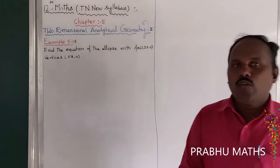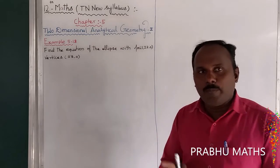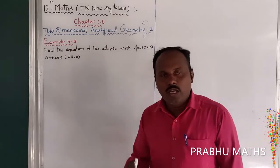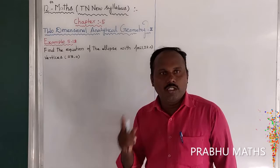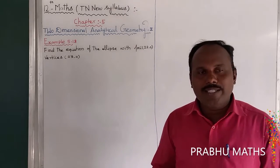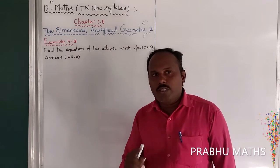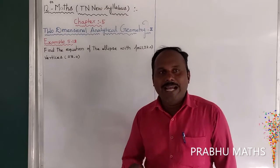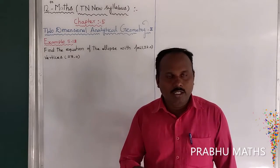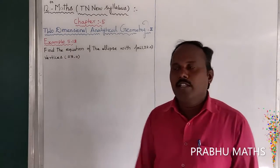For the ellipse, there are two standard formations. The first formation is x² / a² + y² / b² = 1. The second formation is x² / b² + y² / a² = 1. For formation 1, the major axis is along the x-axis. For formation 2, the major axis is along the y-axis.